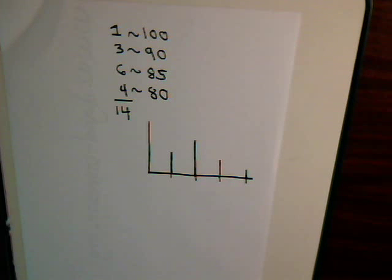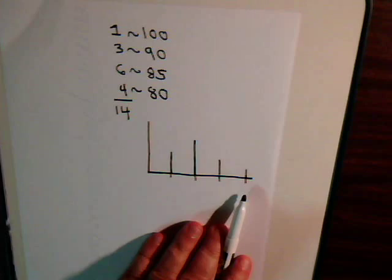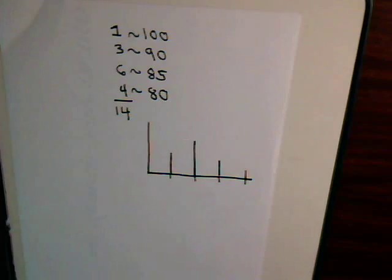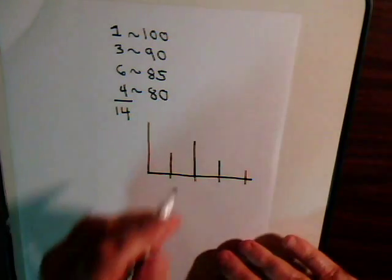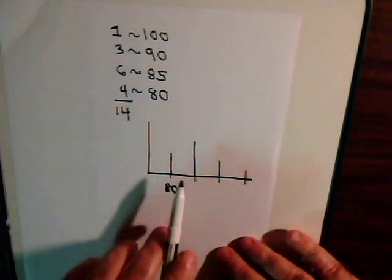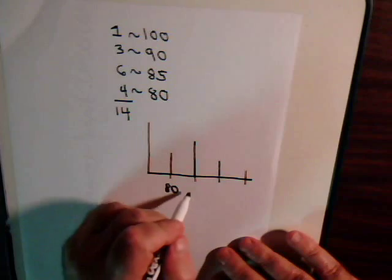And then if we just did a crude graph representation where this axis represents the score and this axis represents the number of people that attained that score, then if we were at 80, four people obtained an 80. If we were at 85, six people had a score of 85.